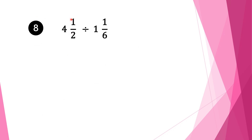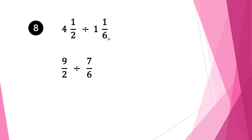Moving on to equation 8. We have 4 and 1 half divided by 1 and 1 sixth. Again we convert the mixed fractions into normal fractions. So 2 times 4 is 8, plus 1 is 9, and we bring our denominator 2 as it is. We bring the division sign as it is. For the second fraction: 6 times 1 is 6, plus 1 is 7, and we bring our denominator 6 as it is.